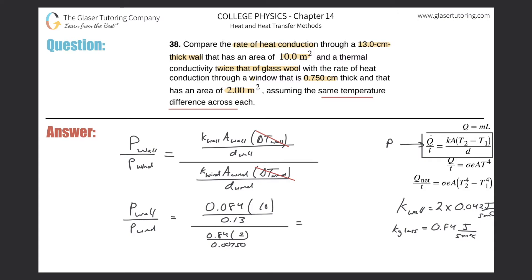So let's see what we got. So 0.084 multiplied by 10 divided by 0.13, and then take that result and divide it now by 0.84 times 2 divided by 0.0075. And what do we get? So we get now a value of basically 0.0288, three sig figs, 0.0288. That is the comparison.